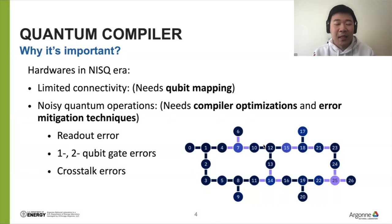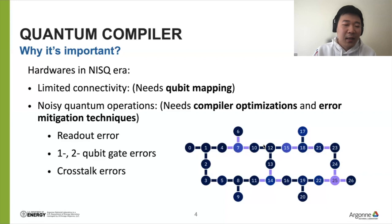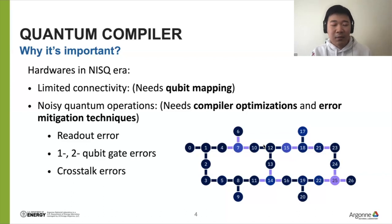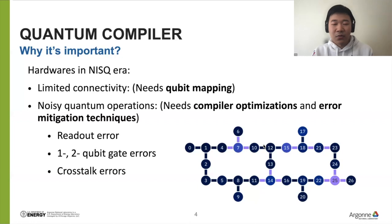Compiler optimizations typically reduce the number of noisy basic operations to reduce the noise level in your circuit. There are also error mitigation techniques that can be applied at the software level, handled by quantum compilers. Examples of error sources include readout errors, single and two-qubit gate errors, and crosstalk errors. There are many different error sources and different ways of handling them.